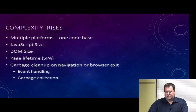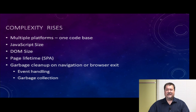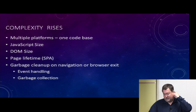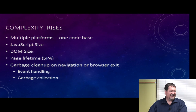Complexity rises when you start doing things on multiple platforms with one code base. JavaScript size — the bigger your code gets, the more libraries you use, and you start running into namespace collision problems. Then page lifetime and garbage collection and cleanup — browsers don't have infinite amounts of memory. All of these cause immense complexity.